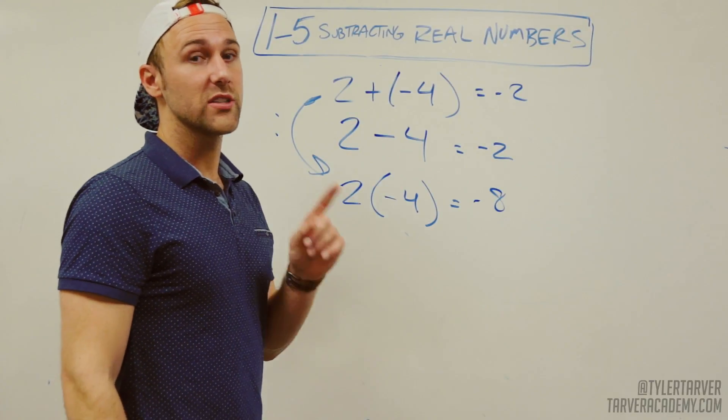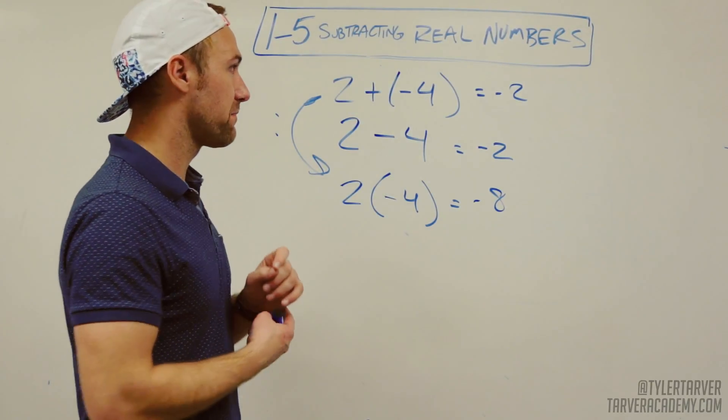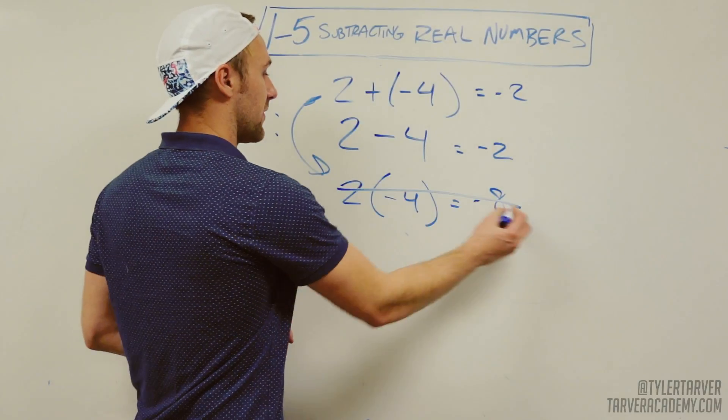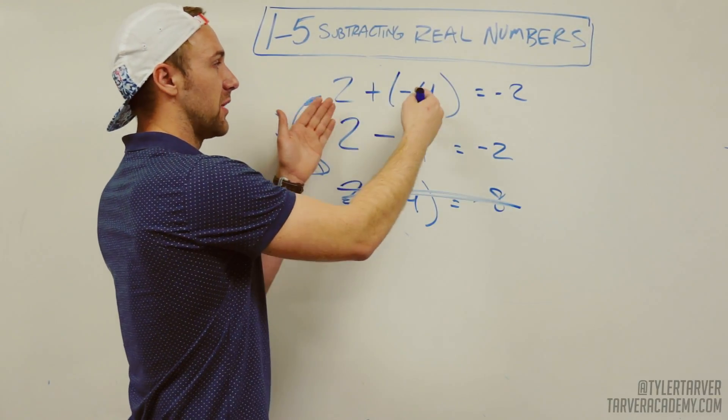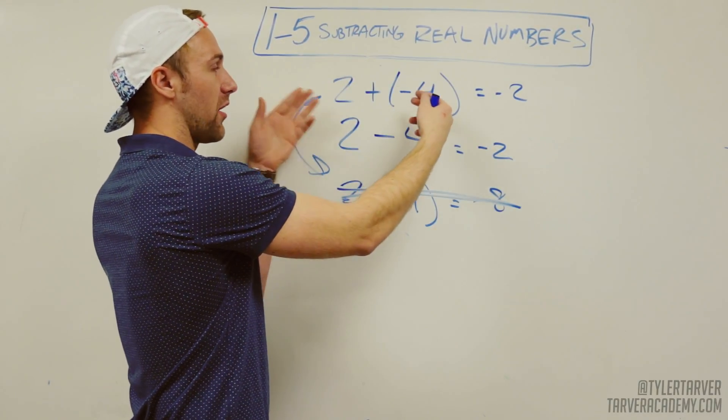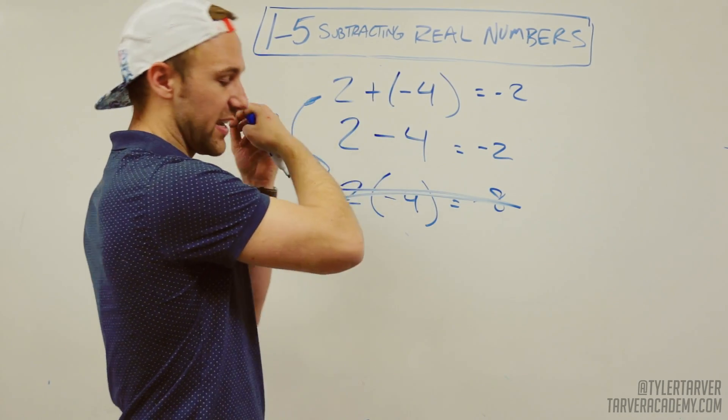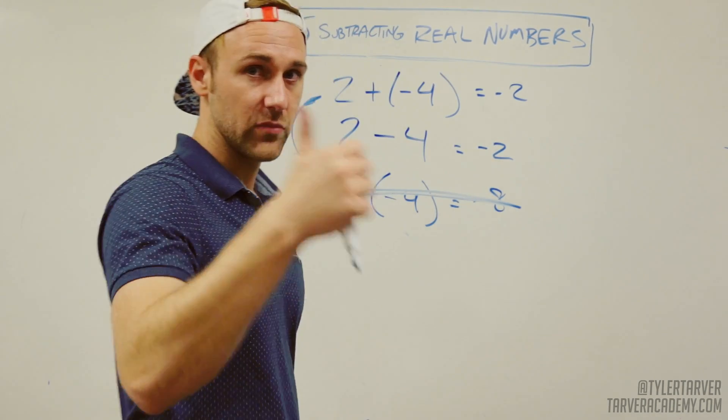So you're multiplying those two. That's not the same. This is because those two are the same because you are adding a negative. Negative overtakes it. You good.